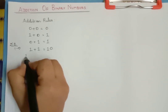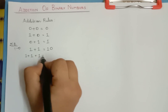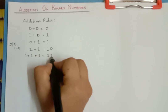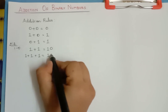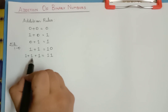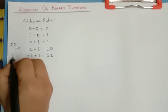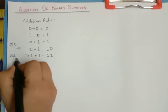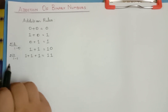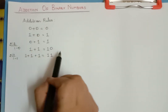Similarly, 1 plus 1 plus 1 will be equal to 11. That is, it is 1 with a carry over of 1. The reason is the decimal number 1 plus 1 plus 1 is 3. Now if you divide 3 by 2, you get 1 and the remainder is also 1. So that 11 is what we have here. These are the addition rules.